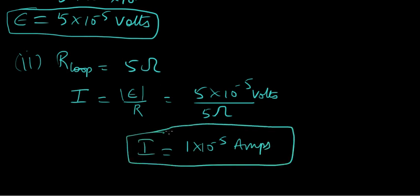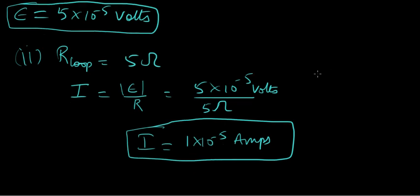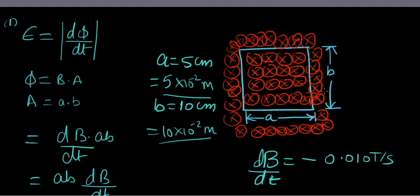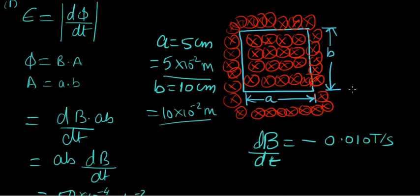They also want the direction of the current induced in the loop. From Lenz's law, the direction of the induced magnetic field in a current-carrying conductor is going to oppose the field that is causing it. The present field is going into the page, so the induced magnetic field is going to oppose this — meaning it will be directed out of the page.